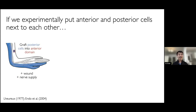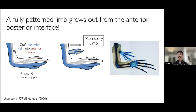In a different assay called the accessory limb model, it's possible to graft — transplant — a patch of blue cells into the red part of the limb, and under the right experimental conditions, by putting the red and blue cells next to each other, it's possible to grow out an entire ectopic limb called the accessory limb, and you can see a real example there on the right. By interrogating the factors that control red and blue identity, it's clearly possible to begin to unravel both limb regeneration and the formation of de novo limbs.